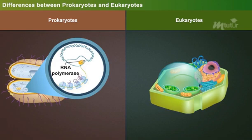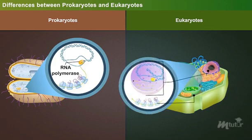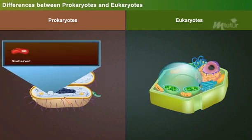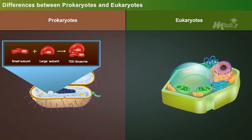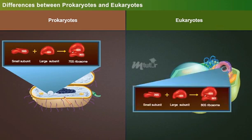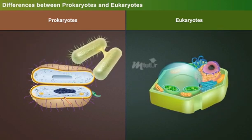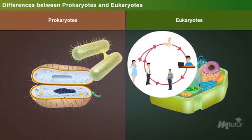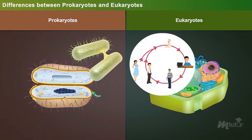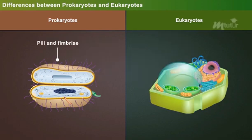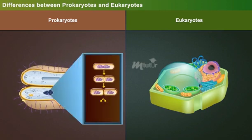In prokaryotes, transcription and translation take place in the cytoplasm. Whereas in eukaryotes, transcription occurs in the nucleus and translation occurs in the cytoplasm. Ribosomes are 70S in prokaryotes and 80S in eukaryotes. Sexual reproduction is very rare in prokaryotes, while most eukaryotes reproduce through sexual methods. Prokaryotes may have pili and fimbriae, and these are absent in eukaryotes.